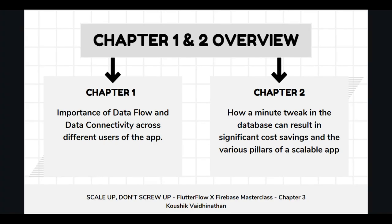In Chapter 2, we spoke about how minute tweaks in our database structure can result in significant cost savings as we start scaling our application and onboarding more users. When more people use our application, the billing cycles can be quite complicated. We need to be on top of our game if we want to build scalable applications consumed by 50,000, 100,000, 500,000, or a million users — with regard to how the database is architected, how it's structured, how you store data, how you retrieve data, and how you deliver content efficiently.